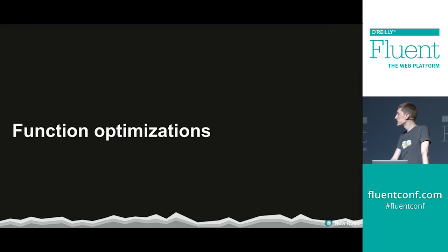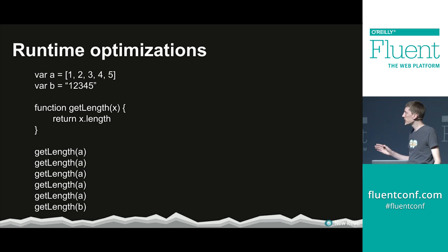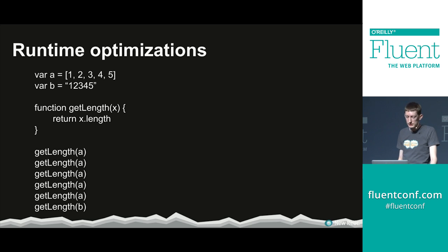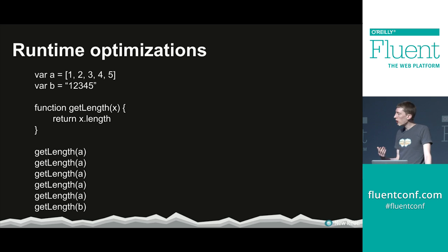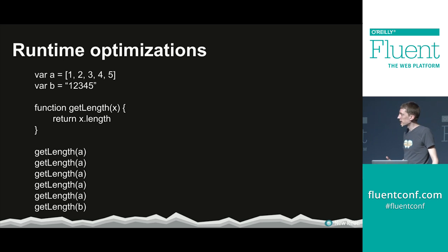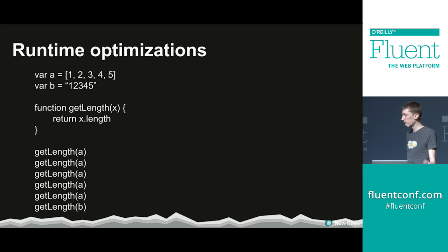Moving on to function optimizations. We have two variables — one is an array and one is a string — and a simple function called getLength that returns the length of whatever is passed in. We call it five times on variable a (an array) and once on variable b (a string). A real optimizing engine would actually do function inlining here — taking all invocations of getLength and replacing them with variable.length directly, and even dropping invocations if the return value is unused.